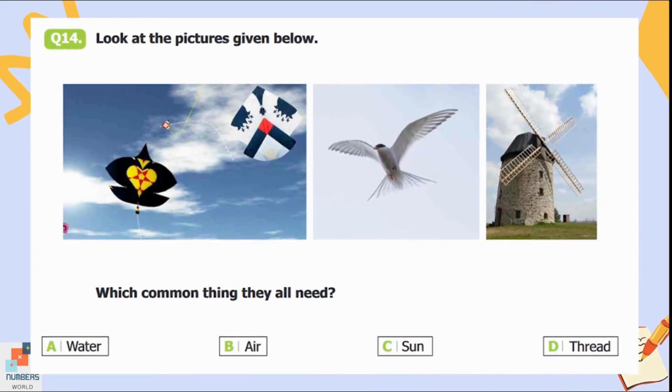Question number fourteen: Look at the pictures given below. Which common thing do they all need? Option A is water, B is air, C is sun, and D is thread. We can clearly see kites and birds need air to fly, and the windmill also works with the help of air. So option B is the correct answer. All these things need air to fly or work.